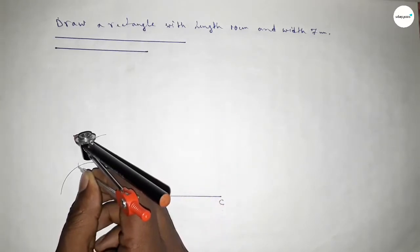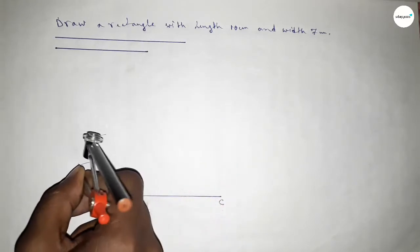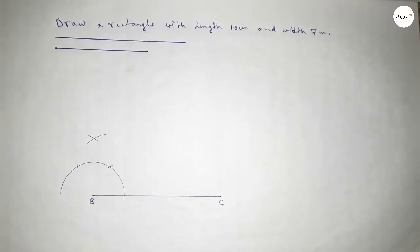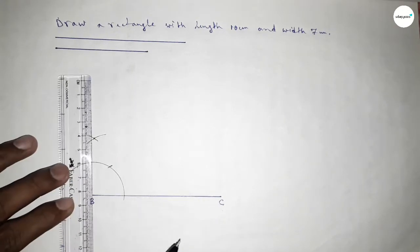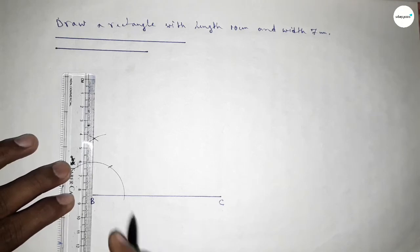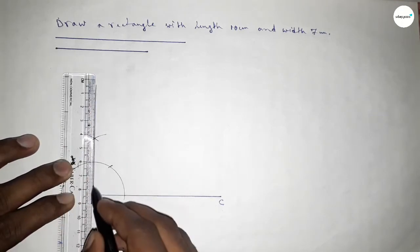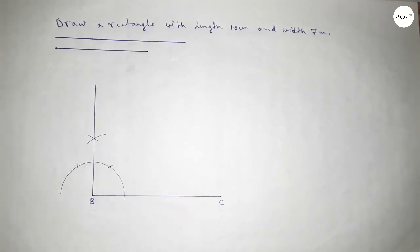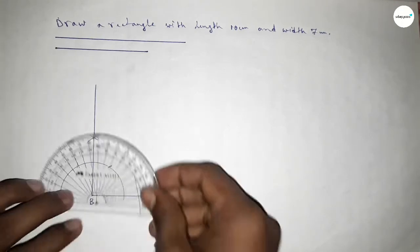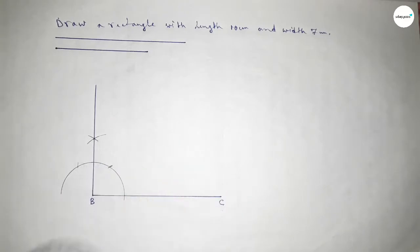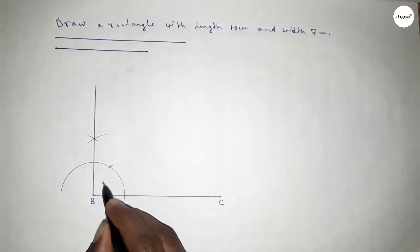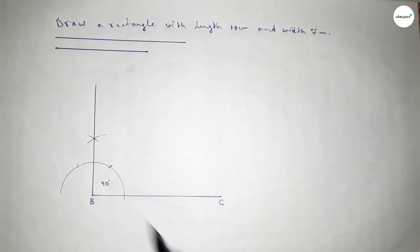Drawing an arc here and putting the compass here and cutting here, so both curves intersect at a point. Joining this side. Now checking whether it is 90 degree or not — this is perfectly 90 degree angle.